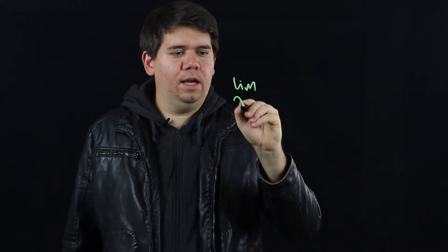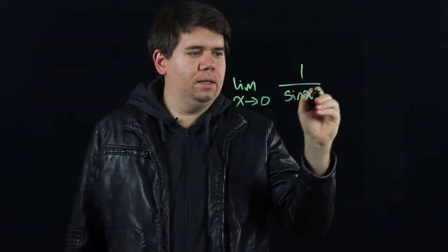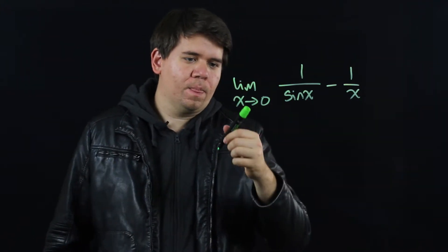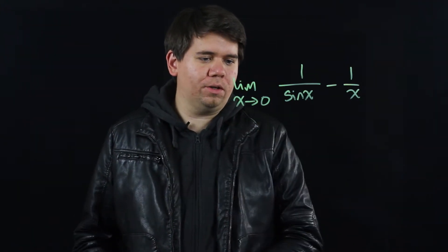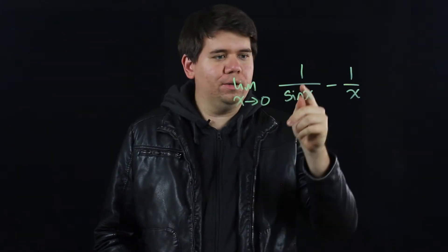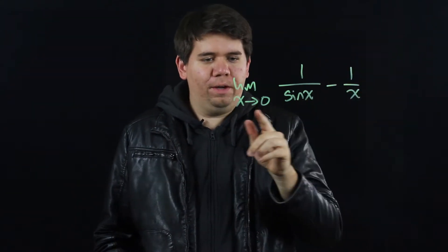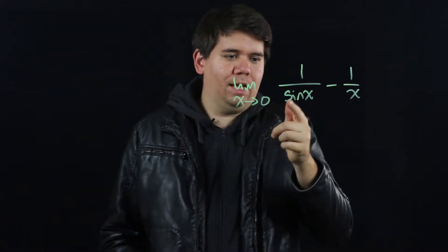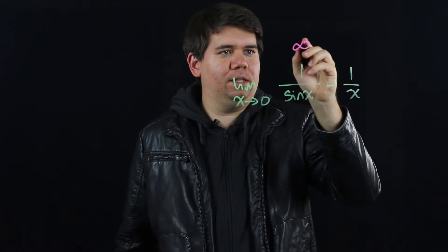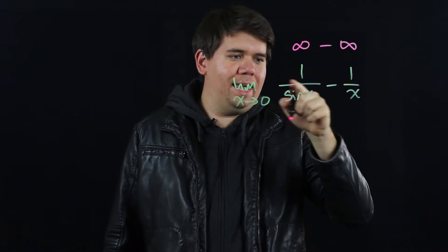What is the limit as x goes to 0 of 1 over sin(x) minus 1 over x? If we just think about what's happening as x becomes arbitrarily close to 0, sin(x) is getting close to 0 as well, so 1 over sin(x) is going to blow up. If we're coming to 0 from the right-hand side, we're going to be blowing up to infinity minus infinity.